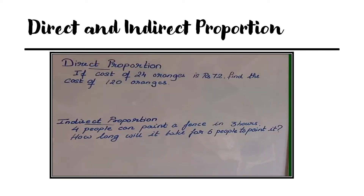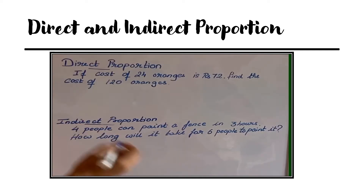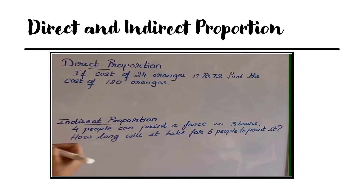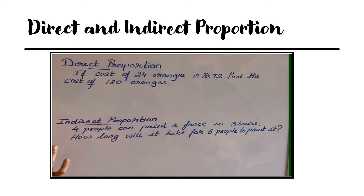Direct proportion means if one quantity increases, the other increases. If one decreases, the other also decreases. That is direct proportion.